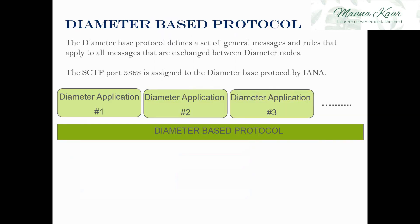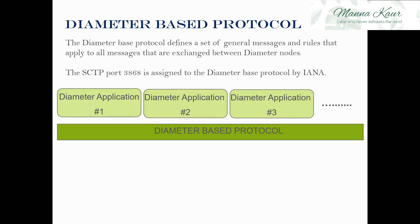The diameter base protocol has certain defined rules and regulations that need to be applied to the messages exchanged between diameter nodes. SCTP port 3868 is assigned as the diameter base protocol port by IANA, and all the characteristics of the diameter base protocol are inherited in all applications built above it.